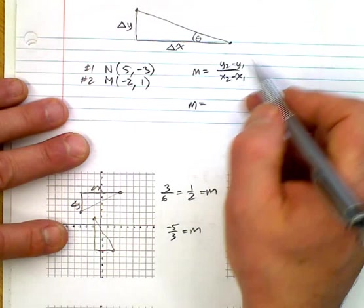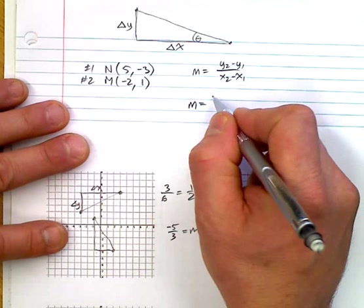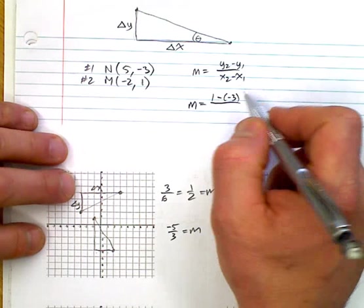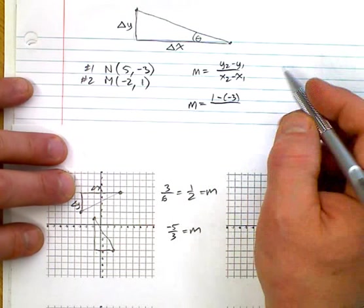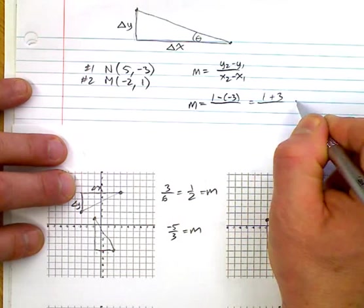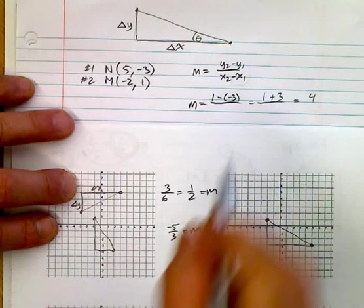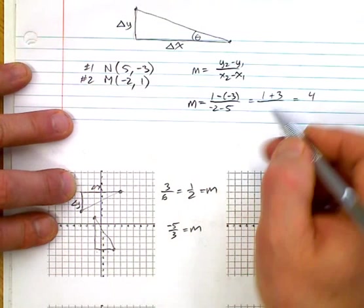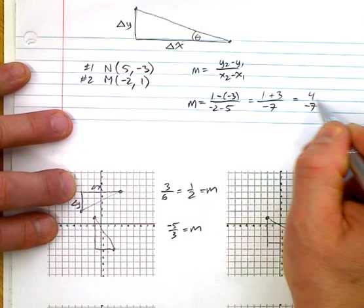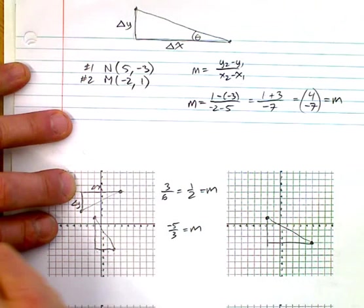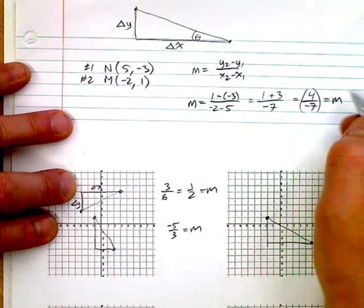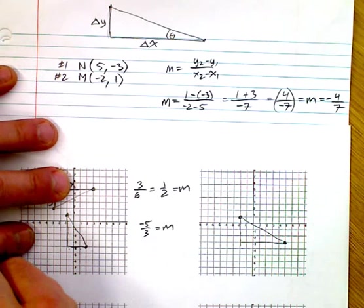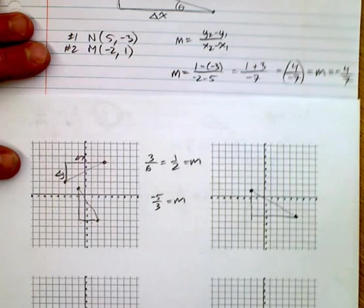So if you want to find the slope in this situation, you go y2 minus y1. So this is y2, 1 minus a minus 3. And you have to be very careful with your negatives here. Notice that the negatives I always put in brackets helps me realize that that's going to turn into 1 plus 3, which is 4. Now let's do the bottom. x2 minus x1. So minus 2 minus 5. Minus 2 minus 5 is negative 7. So I have a slope of negative 4 over 7. Now you can just write that as negative 4 over 7. We don't usually need the negative on the bottom, but it doesn't really matter. That would work. No problem.